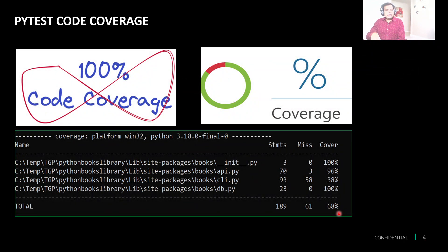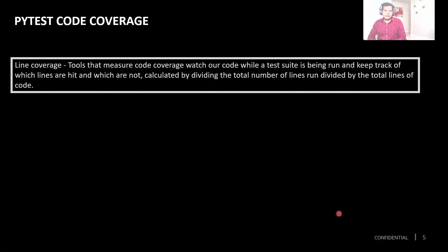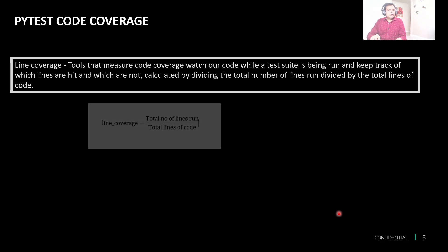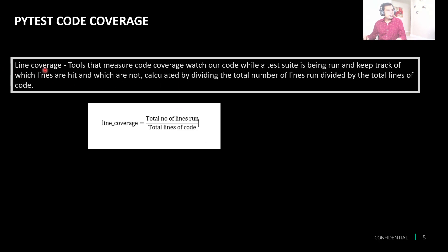To answer these questions, here are some basic definitions. Line coverage calculates how many lines of code were called by the test application or script, then we divide that number by all lines of code and multiply by 100, and that gives us the line coverage percentage.